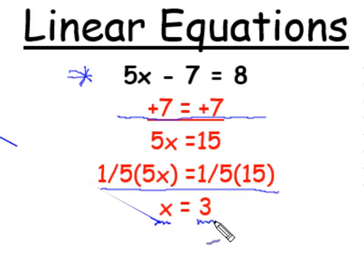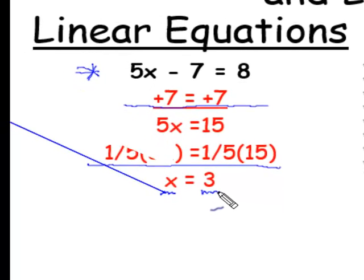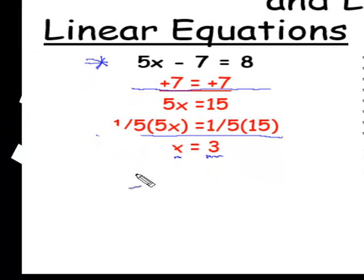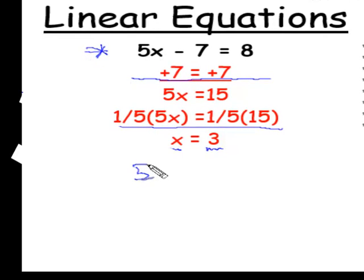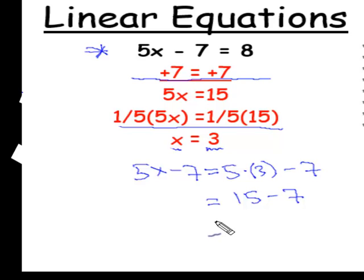And so, we've arrived at the possible solution for our equation: x should equal 3. We check this by computing 5x minus 7 when x is 3. That's 5 times 3 minus 7, which gives us 15 minus 7, which is 8.